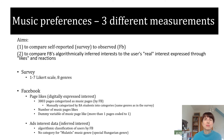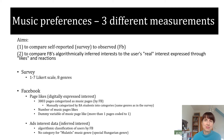In this paper we focused on how our respondents like different music genres. Beyond comparing survey to Facebook data, we also aim to compare Facebook algorithmically inferred interest to the user's real interest expressed through likes and reactions. The inferred interests are available for targeting advertisers and are also used to determine the content of the user's news feed. The exact method of the algorithm is a trade secret.